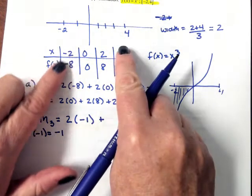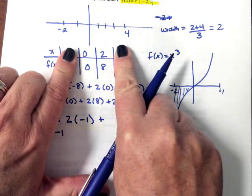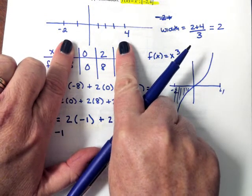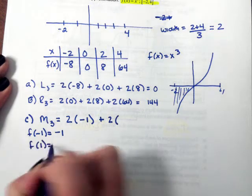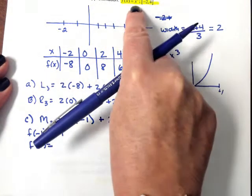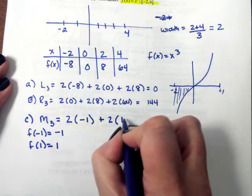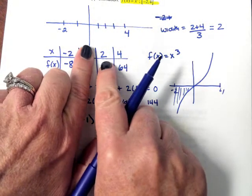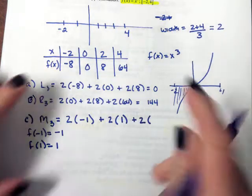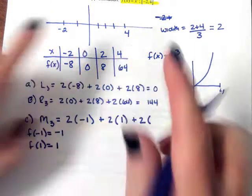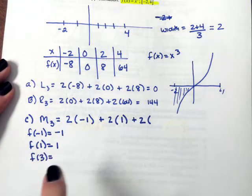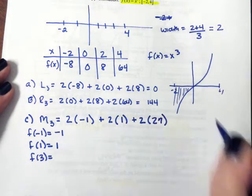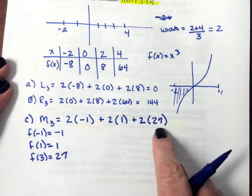Now I need to find the midpoint of the next rectangle from zero to two. The width is two, and the midpoint is x equals one. So f of one equals one — that's the height for this rectangle. For the last rectangle from two to four, the width is still two. The midpoint is three, and f of three equals 27, so that's the height for the third rectangle.